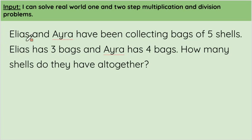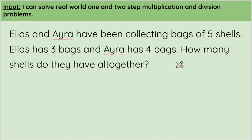It says Elias and Ira have been collecting bags of five shells. Elias has three bags and Ira has four bags. How many shells do they have altogether? So we want to know how many shells both Elias and Ira have together.